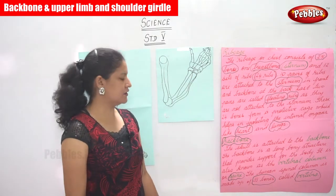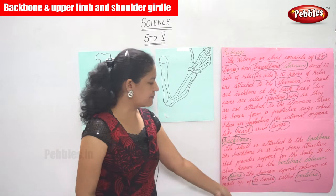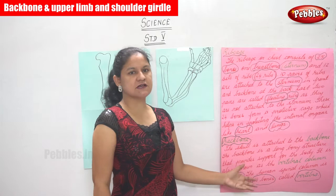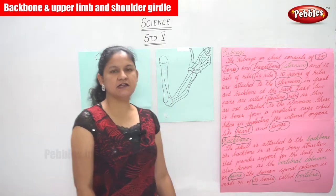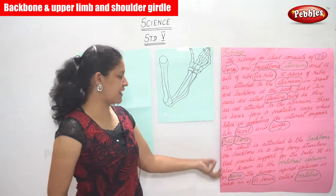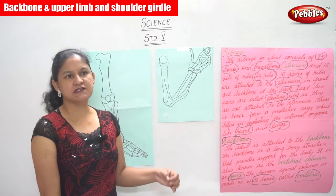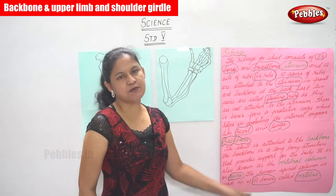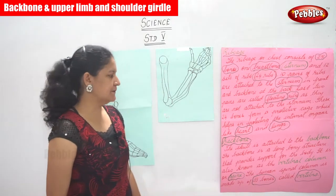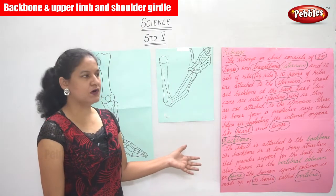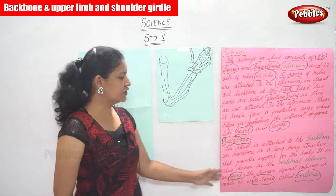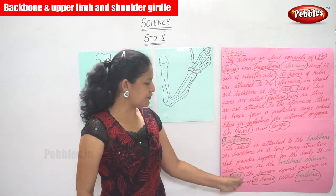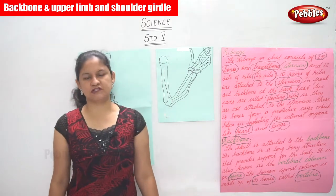The human spinal column is made up of 33 bones called the vertebrae. The skull is attached to the backbone, and the backbone is a long bony structure that provides support for the body, also known as the vertebral column or spine. The human spinal column is made up of 33 bones called the vertebrae.